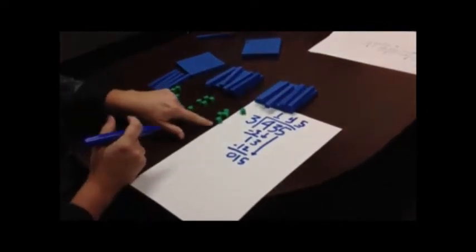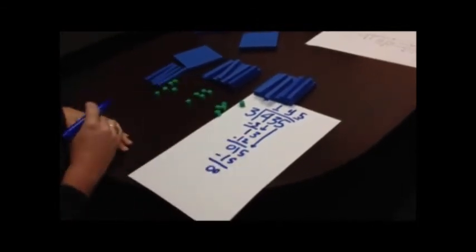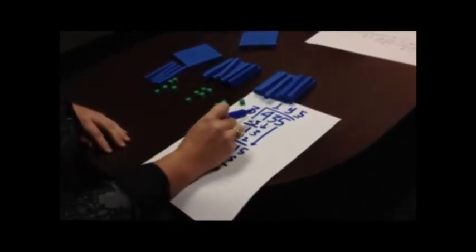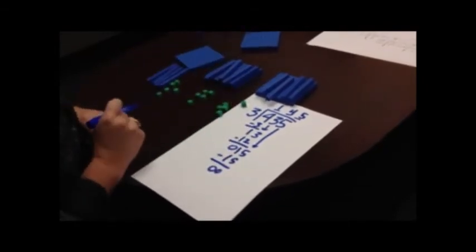Five ones, five ones, five ones, or 5 times 3 is 15. I subtract, and I don't have any ones left, so 435 divided into three equal groups gave me three equal groups of 145.